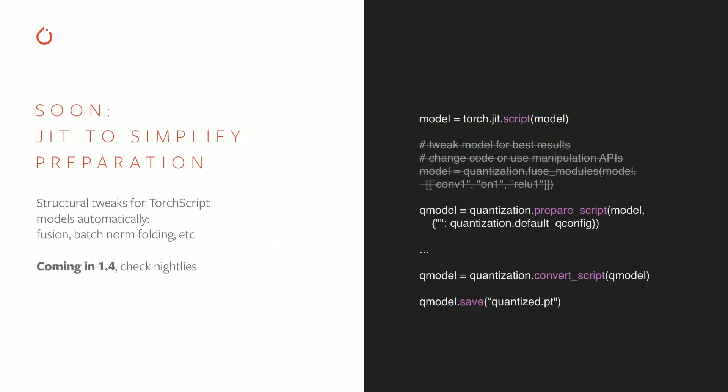You might have noticed that some operations, like folding batch norms, are a little bit nasty to handle manually. If your model can be converted to TorchScript first, we will soon be able to analyze the structure of the model's forward pass and carry out necessary tweaks automatically. This functionality is coming in the next release, 1.4, but an early version should be available in nightly soon.